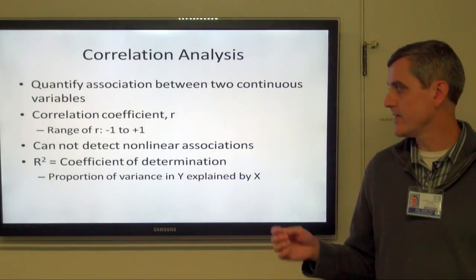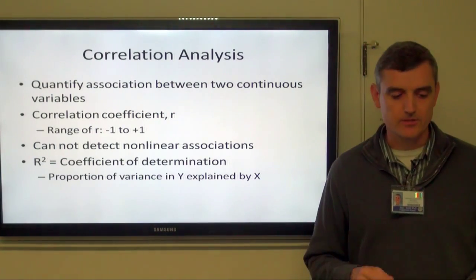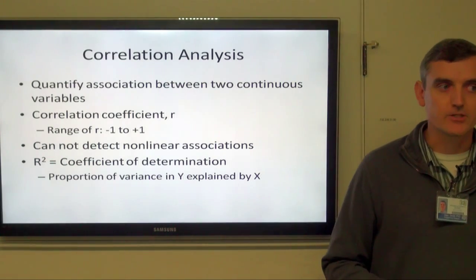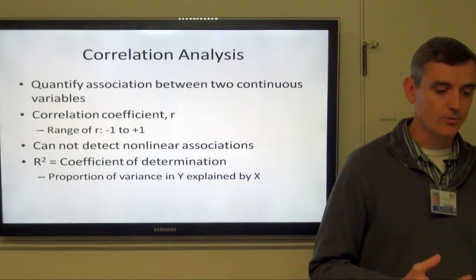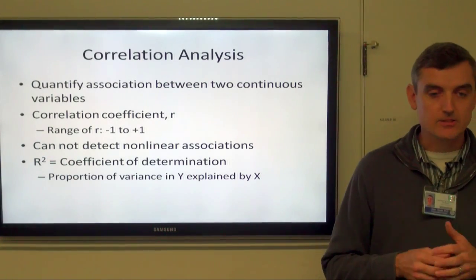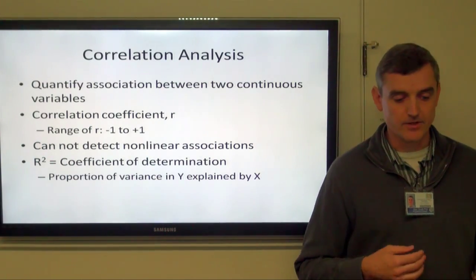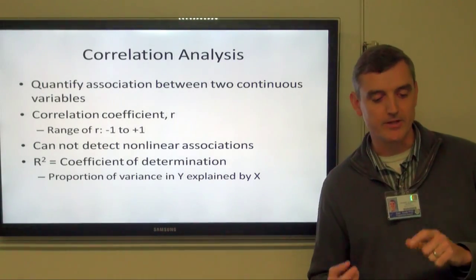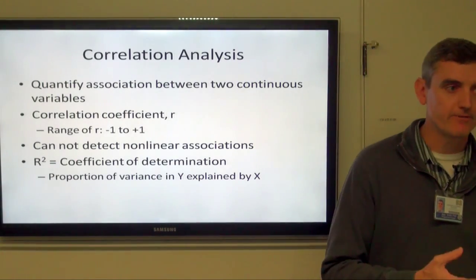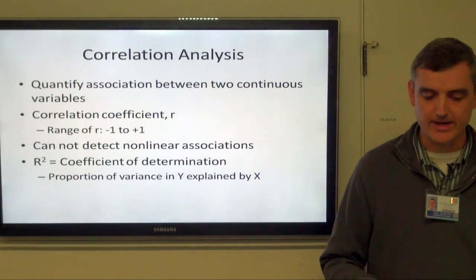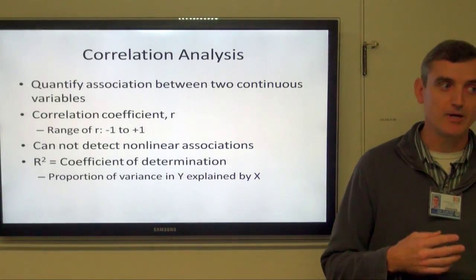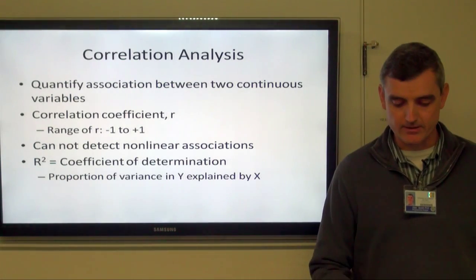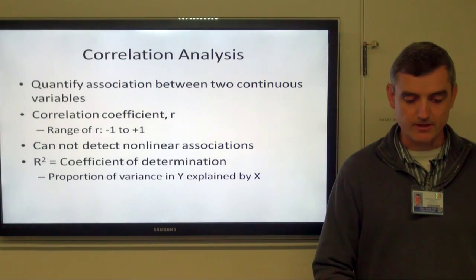The other thing we get out of correlation analysis is r squared, called the coefficient of determination. If you ever see the term r squared, it represents the proportion of the variability in the outcome variable that is explained by the independent variable.